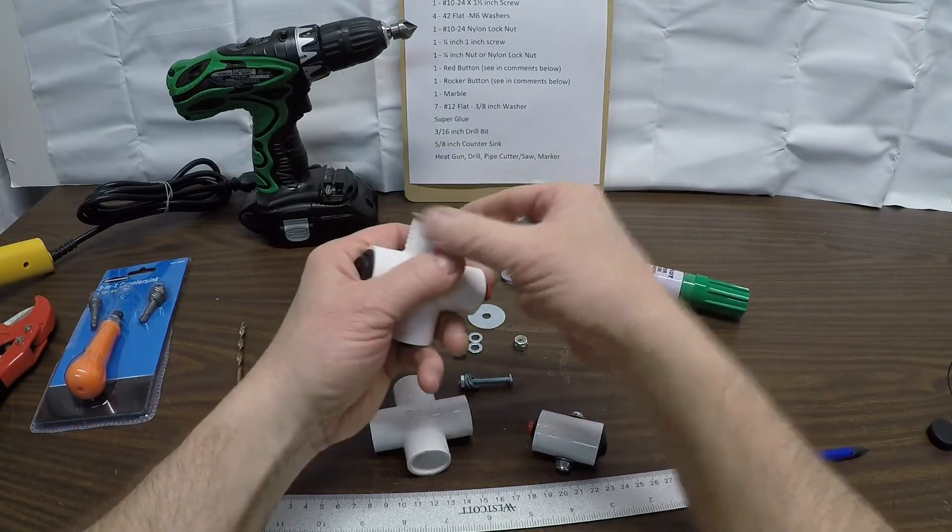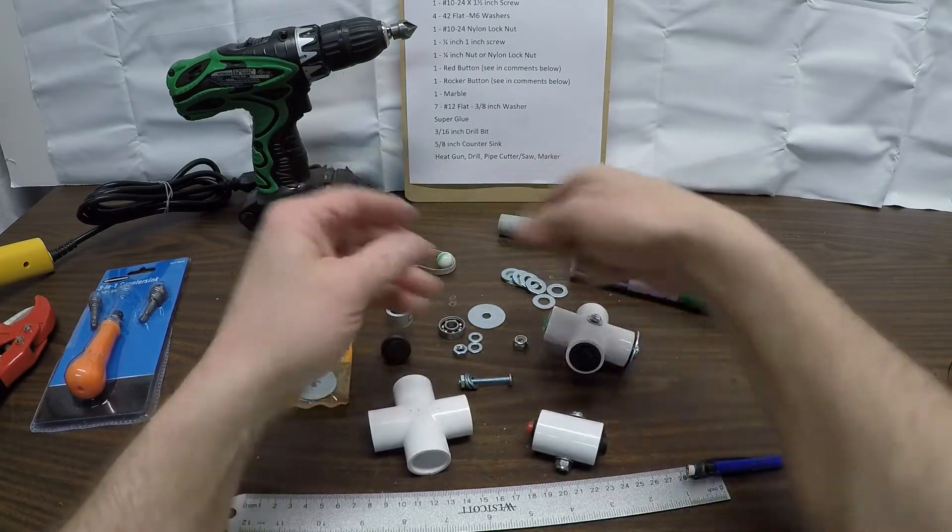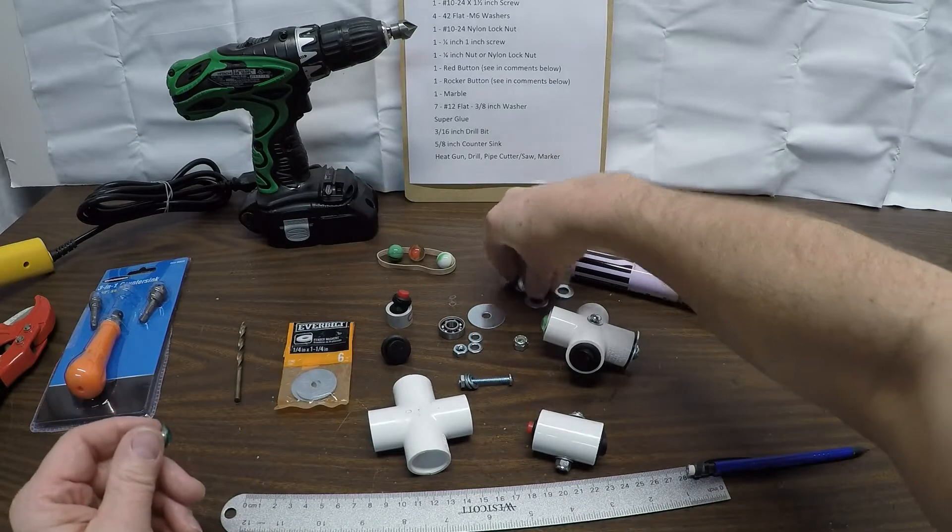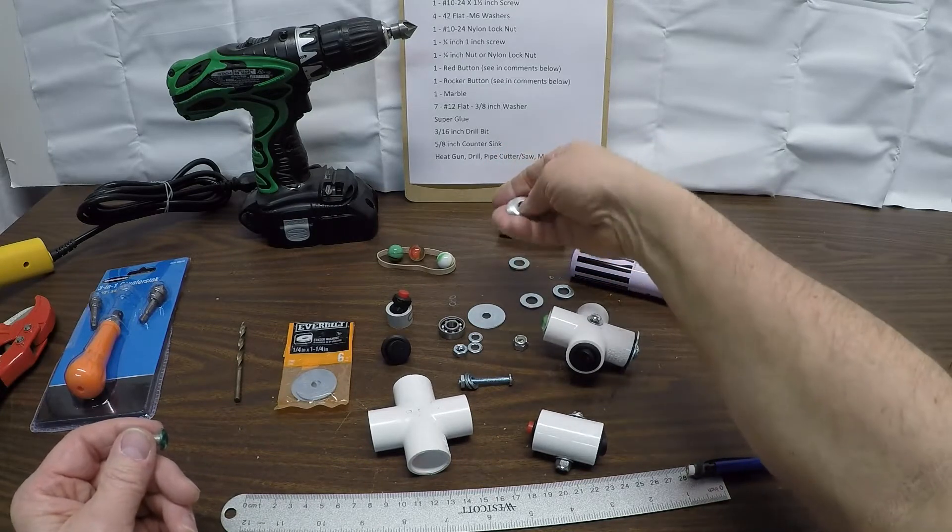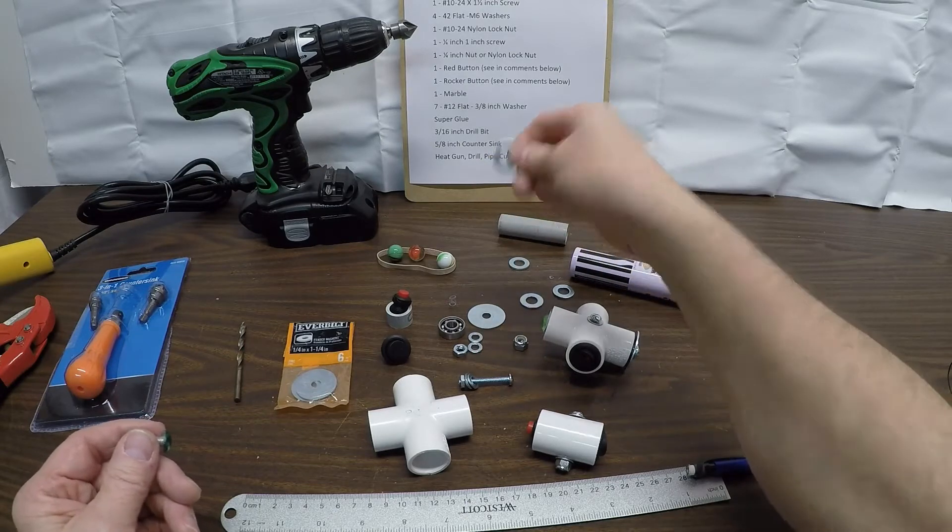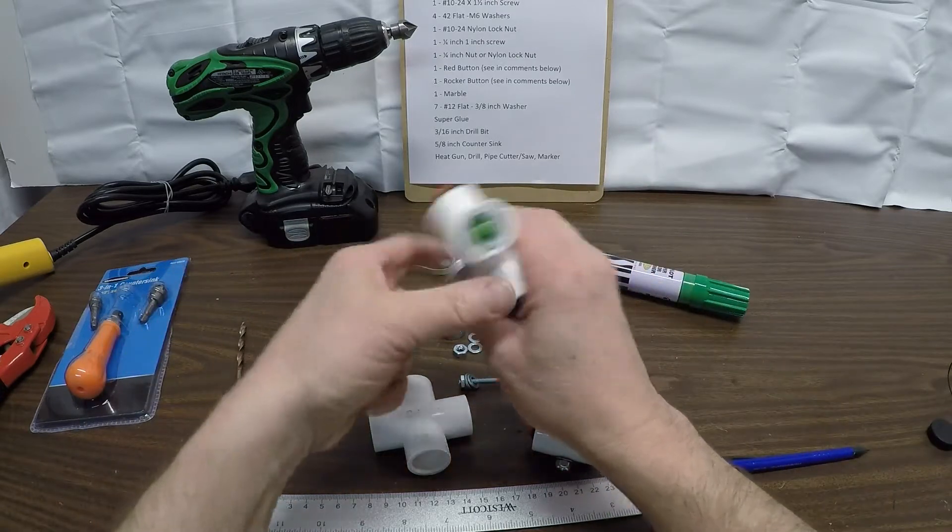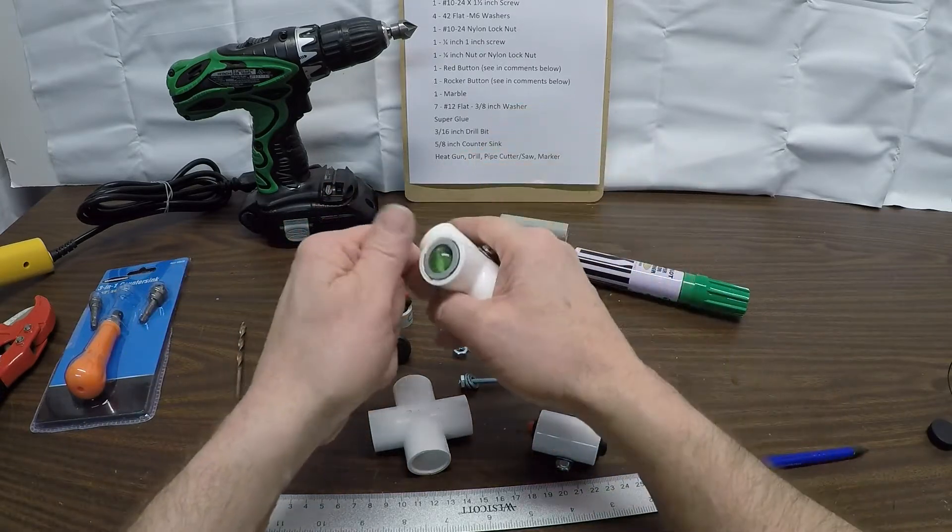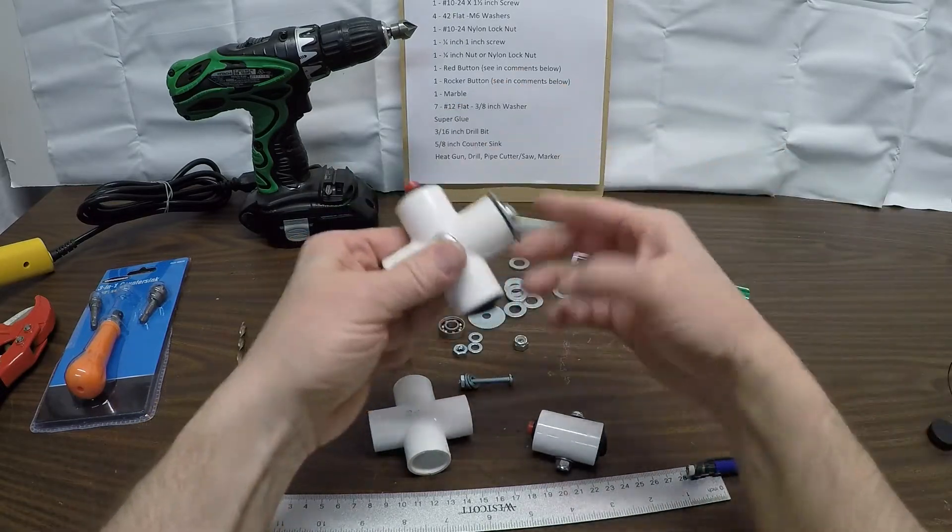You could use something different if you want, totally up to you. Seven of these washers, they're number 12 flat three-eighths inch hole. That's for inside the trackball, that's what you hear a little bit of rattling and it's the counterweight, the weight of this side.